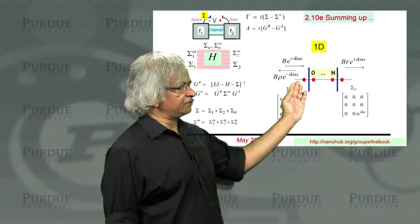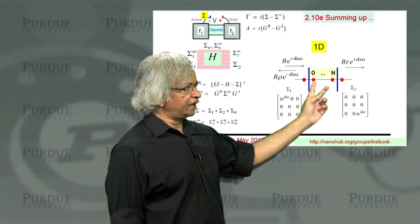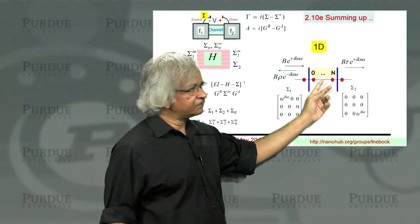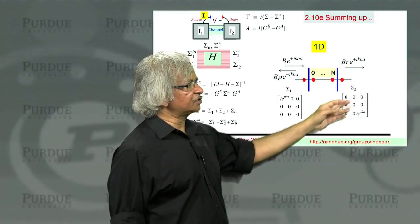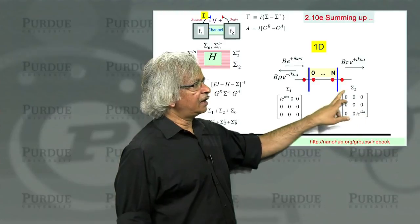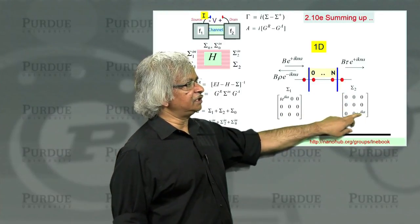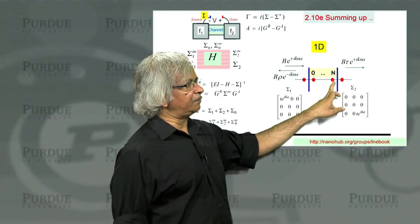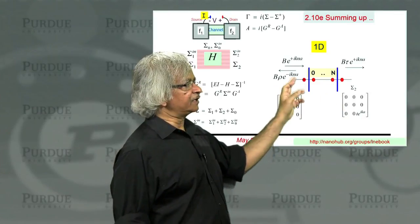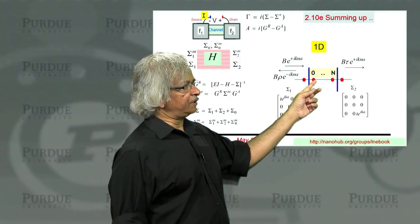The result is a very simple one. If you had a 1D wire, diagonal elements are epsilon, the nearest neighbor coupling is T. Well, then the sigma basically looks like zeroes everywhere except for T e to the power i k a at the point where it is connected. If it is sigma 2, the T e to the power i k a appears at this end. If it is sigma 1, then the T e to the power i k a appears at that end.